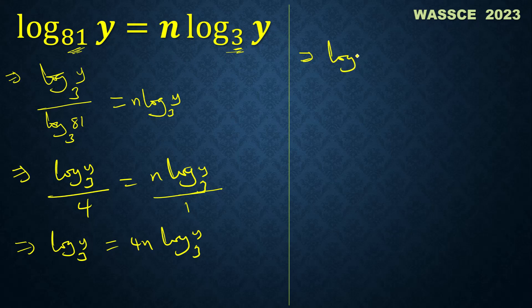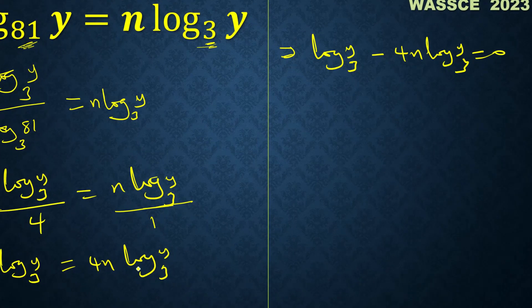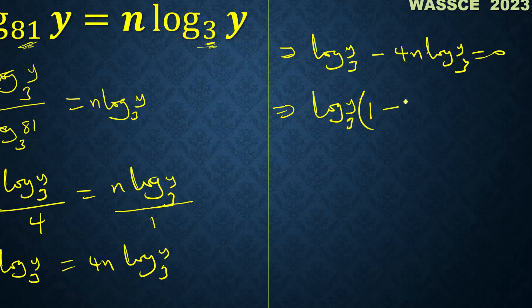Let's write this: log y to base 3 minus 4n log y to base 3 equals to 0. We have something in common here: log y to base 3 is in common. So let's take it out. We're taking it out, so we have log y to base 3 times (1 minus 4n) equals to 0.